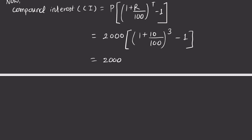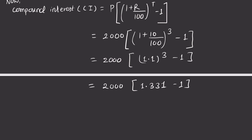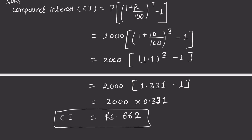2000 times (1 + 0.1) = 1.1. So: 2000 times (1.1 cubed minus 1). 1.1 cubed equals 1.331. Therefore: 2000 times 0.331, which gives compound interest CI = RS 662.